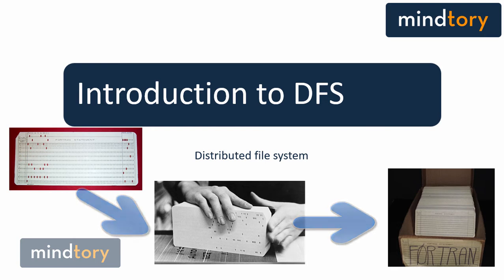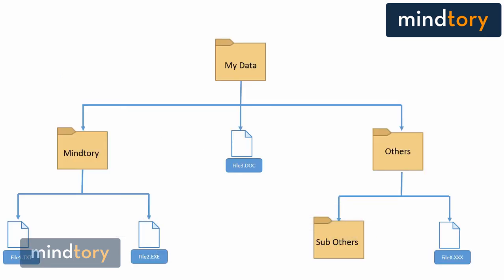This is exactly what happens nowadays but in a different way. Now we have magnetic storage, and we represent each file with a file name and extension. In a graphical user interface operating system, files are presented with icons, and we store groups of related files in folders.